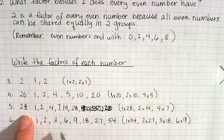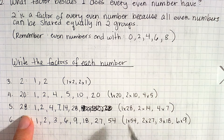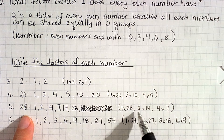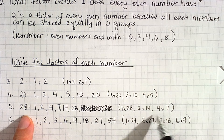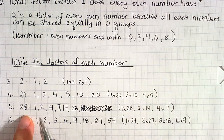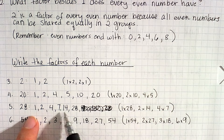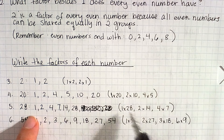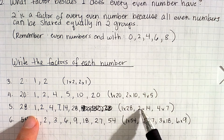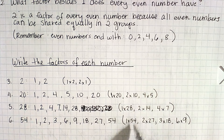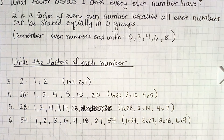The factor pairs for 28 are 1 times 28, 2 times 14, or 4 times 7. So listing them in order, the factors of 28 are 1, 2, 4, 7, 14, and 28.